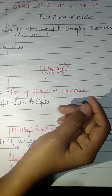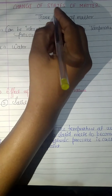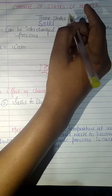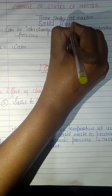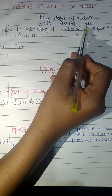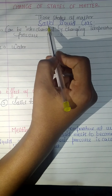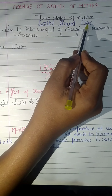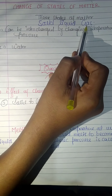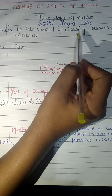As we know, there are three states of matter: solid, liquid, and gas. These three states of matter are able to change into one another. Solid can change into liquid, then into gas; gas can change into liquid, then solid. They are interchangeable.